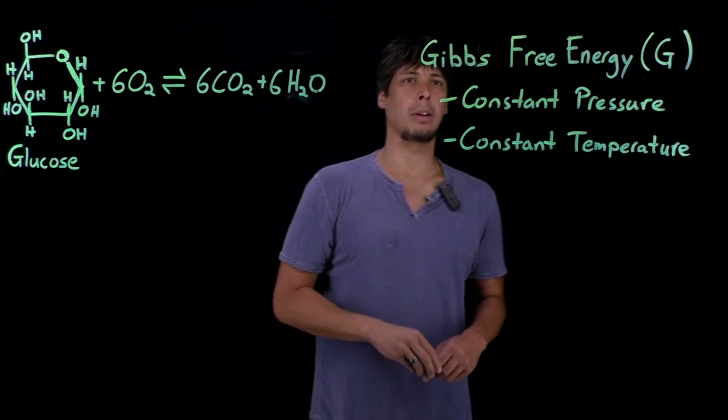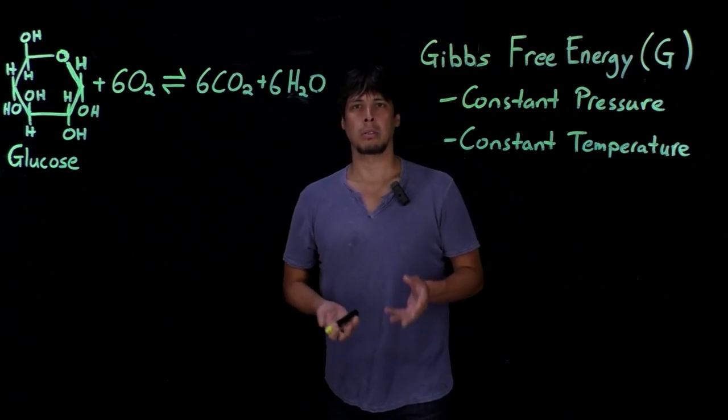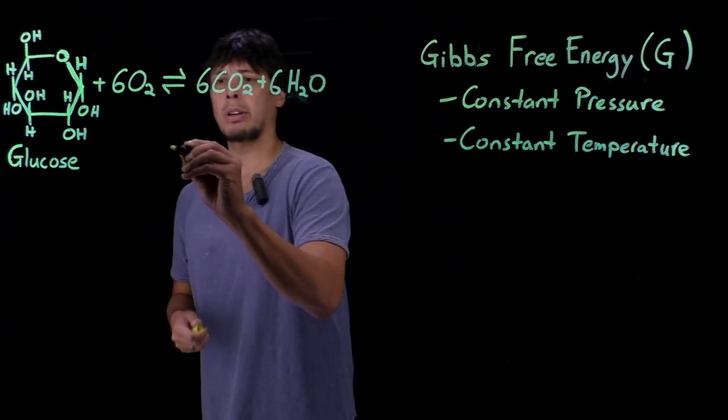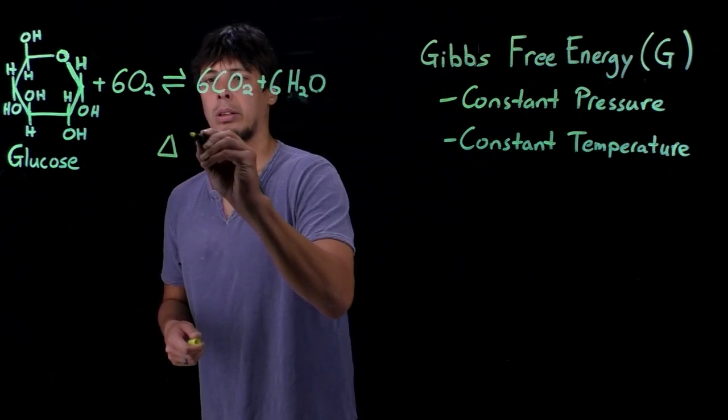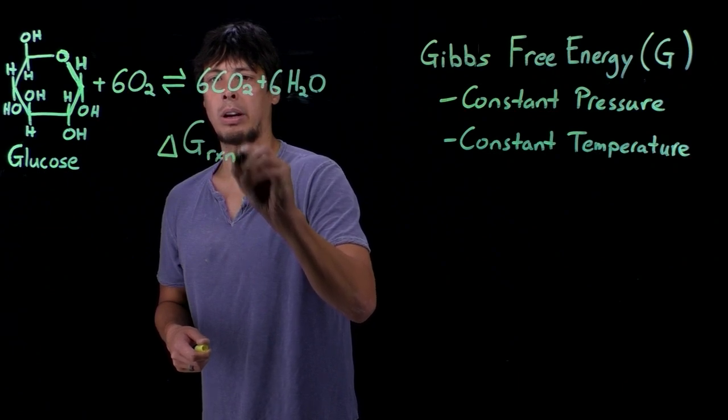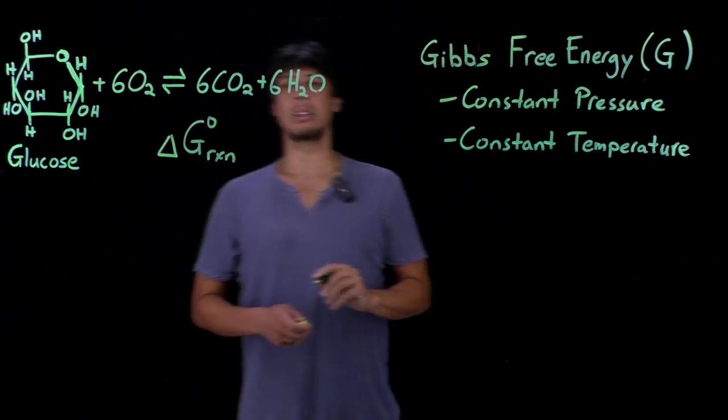Here's the balanced equation for that. So for biochemical systems, the way we do this is we look at the change in the Gibbs free energy of the reaction, which is denoted as ΔG reaction.